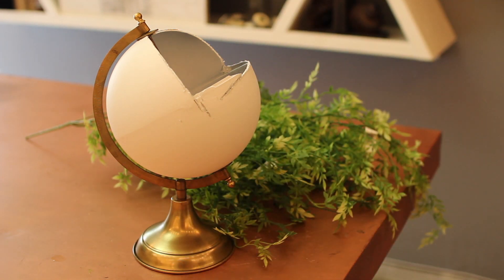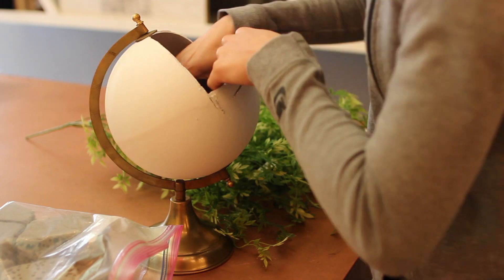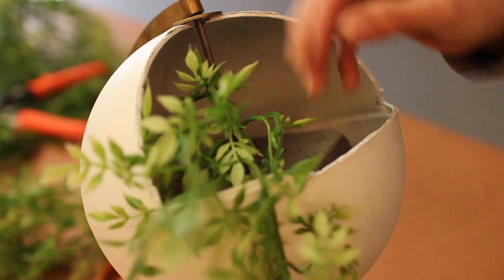I normally never do fake plants, but Michael's has some real good ones right now, plus our bedroom doesn't get the best lighting, so anything would die in it. So I just grabbed some florals that I liked, and then some floral foam, and then I stuffed the entire globe with foam.